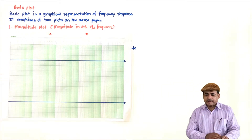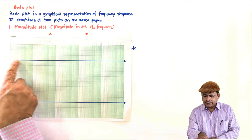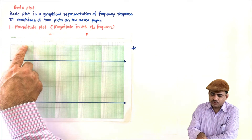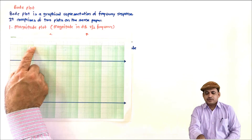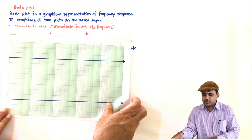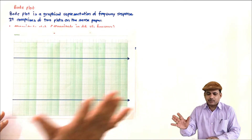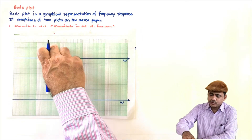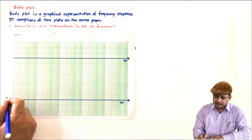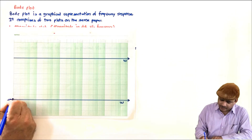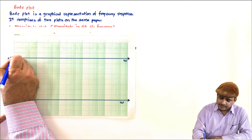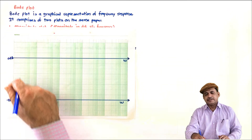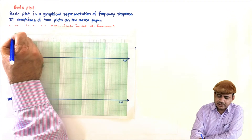This is a semi-log paper. If you look at the x-axis, it has a logarithmic scale: 1, 2, 3, 4, 5, 6, 7, 8, 9, again 1 — that is one decade. This axis is the frequency axis. This portion is used for the magnitude plot and this will be for the phase plot. Let this be the line of minus 180 degrees and this is the line of 0 dB. You will have the magnitude in dB on one axis and phase in degrees on the other axis.